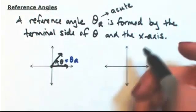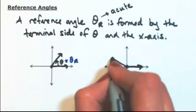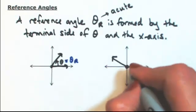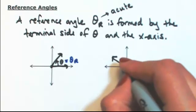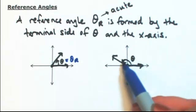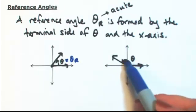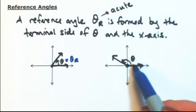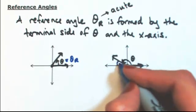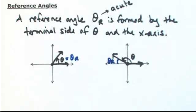Let's say we're in the second quadrant. From the terminal side to the x-axis, there are two ways to get there — either go forward or go back. If I go back, that's more than 90 degrees, so I have to go forward. And there's theta r.